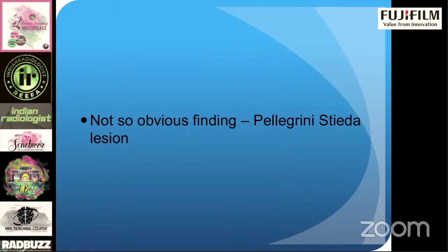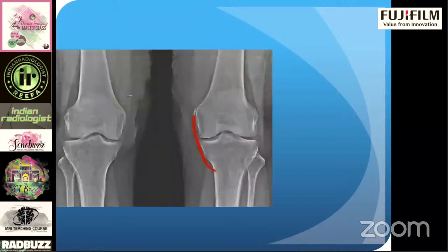This is your medial collateral ligament. This fracture fragment is in the location of the medial collateral ligament, so this is a Pelegrini-Stieda lesion — it can be an avulsion fracture from the medial femoral condyle, or in chronic MCL injuries, calcification can develop towards the femoral attachment and give this appearance.